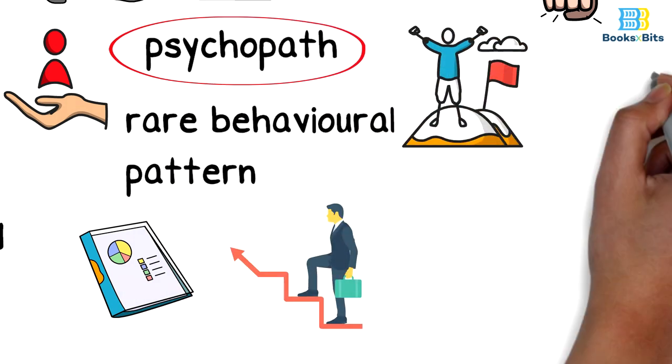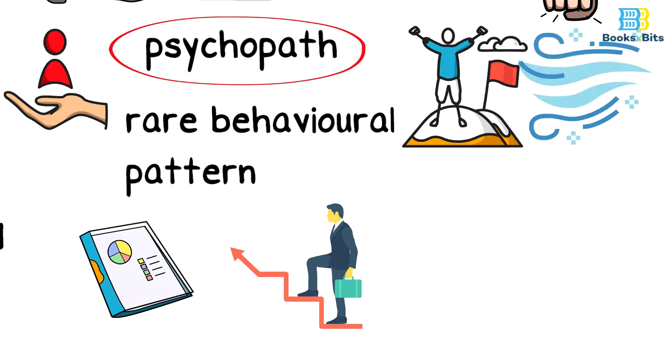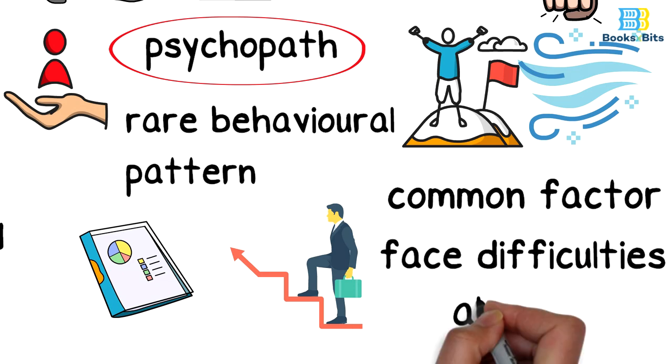It's simply because the higher you go, the stronger the wind and the competition. The common factor between the psychopath and the red person is the ability of both to face difficulties at all levels.